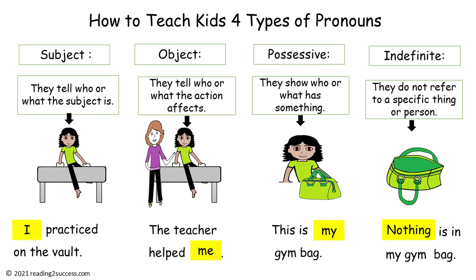Subject Pronouns tell who or what the subject is. Object Pronouns tell who or what the action affects. Possessive Pronouns show who or what has something. And Indefinite Pronouns do not refer to a specific thing or person.